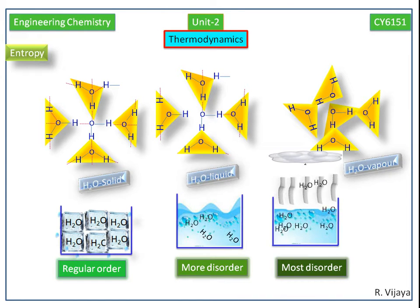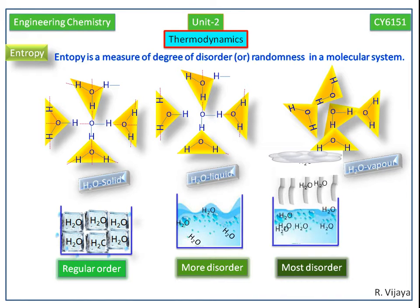Now we see the definition of entropy. Entropy is a measure of degree of disorder or randomness in a molecular system.